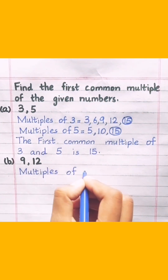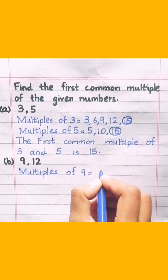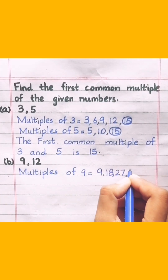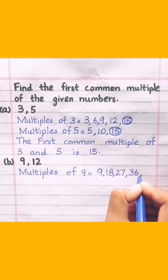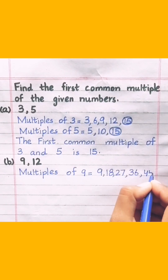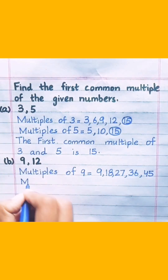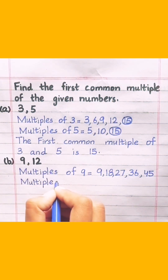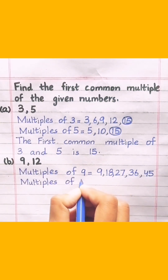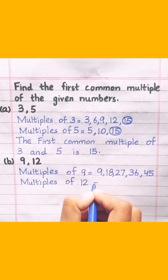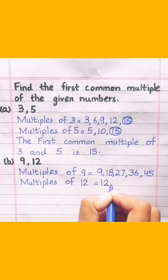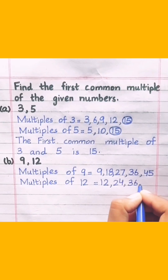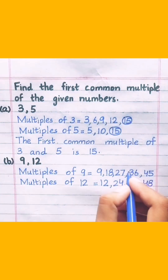Multiples of 9: 9, 18, 27, 36, 45. Multiples of 12: 12, 24, 36, 48.